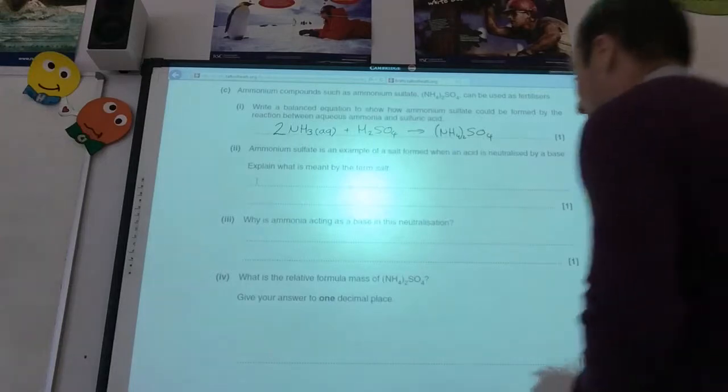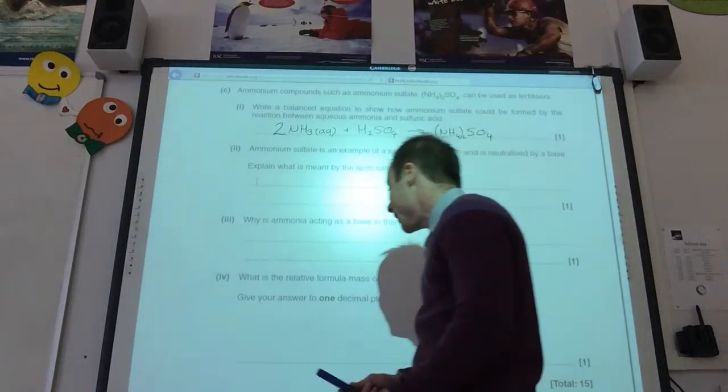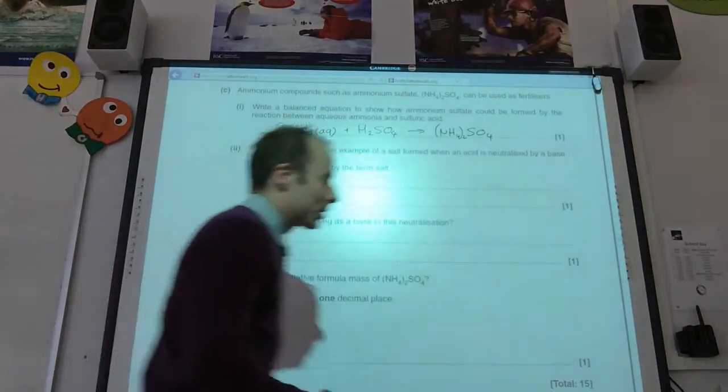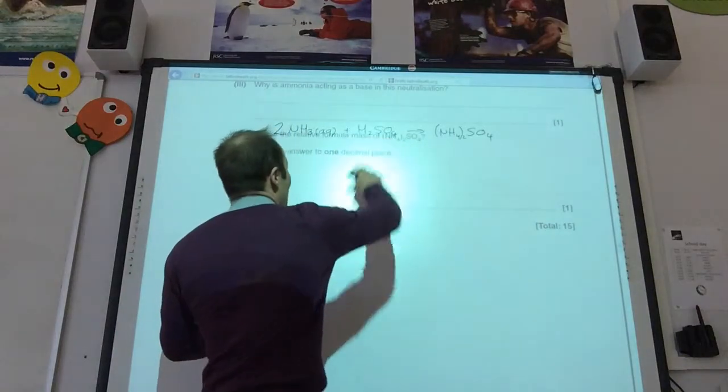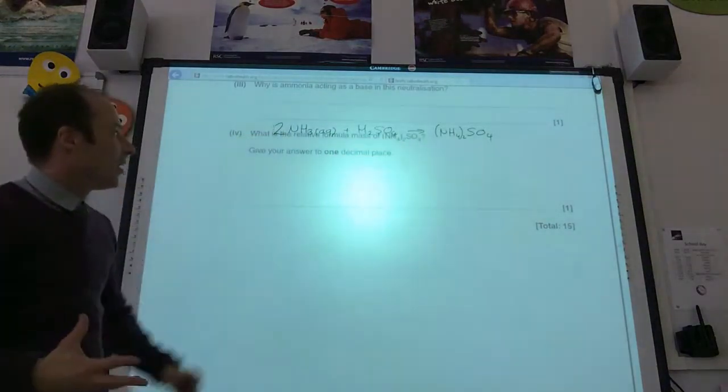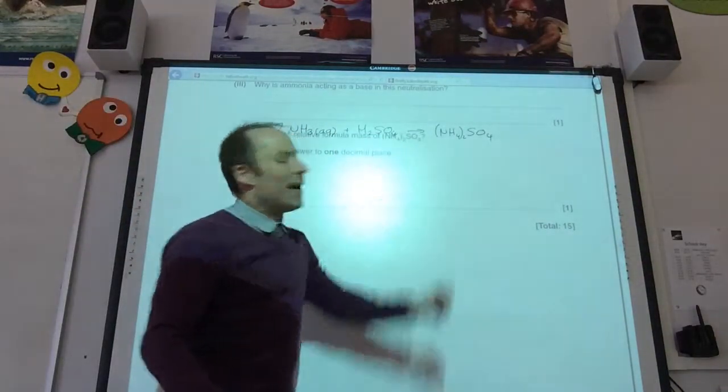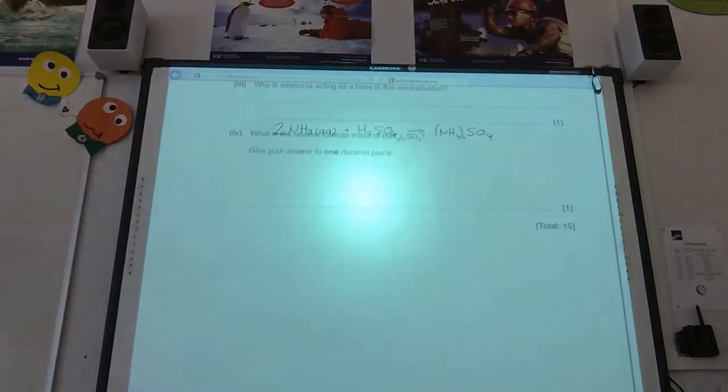And what is a relative formula mass of ammonium sulfate? Well, you just need to get your calculators out and add it all up. So, you've got... There are two nitrogens, eight hydrogens, sulfur and four oxygens. And they come to... Do-do-do-do-do-do-do-do... A hundred and thirty-two point one.